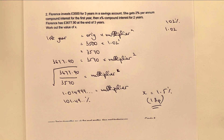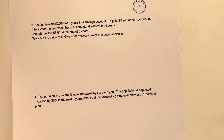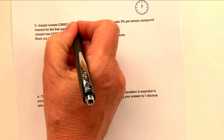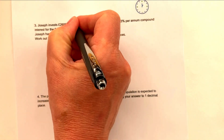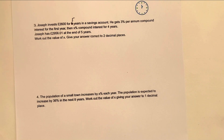Let's move on to question number three, which is actually quite similar. Once you get used to doing these sorts of questions you follow a very similar plan. Joseph invests some money in a savings account — five years in a savings account. He gets 3% per annum compound interest for the first year, then X% compound interest for the next four years. At the end of five years he's got a certain amount of money, so let's do exactly the same and look at the first year.